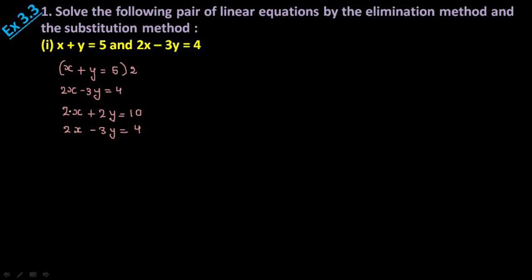Now we need to sometimes add and sometimes subtract. Here both these are like terms, and you can see if we add, the x terms will not get eliminated. So here we need to subtract. When we subtract, all signs will change. In addition, no sign changes, but in subtraction you need to change all the signs. Now 2x - 2x gets eliminated, so you get 2y + 3y = 5y, equals 10 - 4 = 6. So y = 6/5.